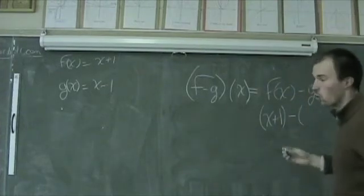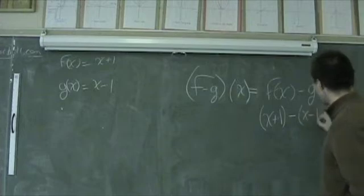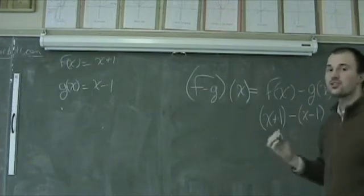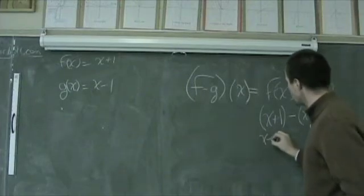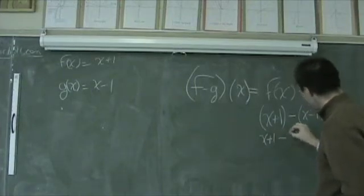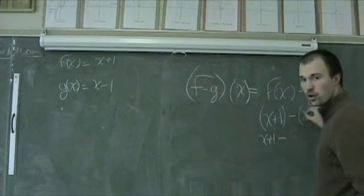And we are subtracting from that the quantity x minus one. The first thing I'm going to do is distribute my negative sign throughout, so we are going to have x plus one minus a negative one times x gives me minus x.